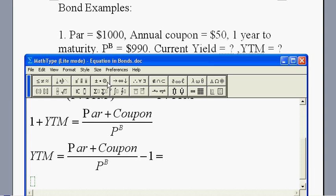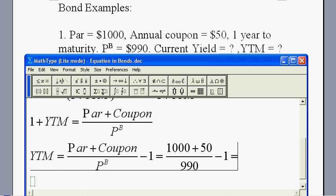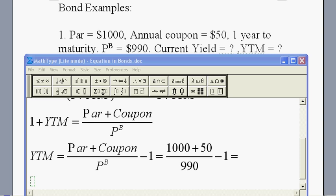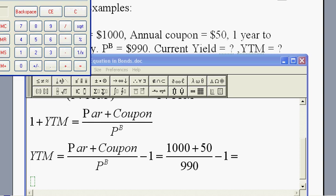Now we can put every number into this calculation. The par is $1000, the coupon is $50, the bond price is $990, then minus one. What does that give me? I still need my calculator here.